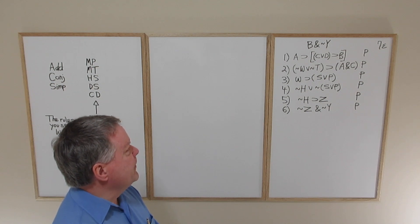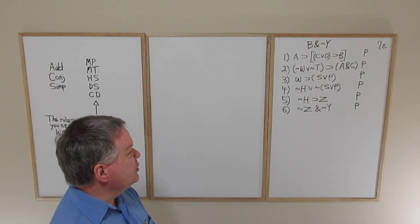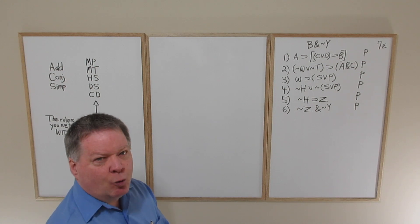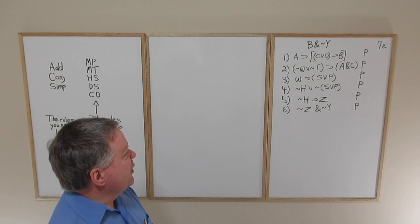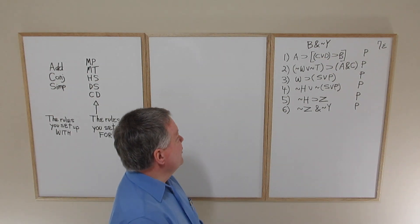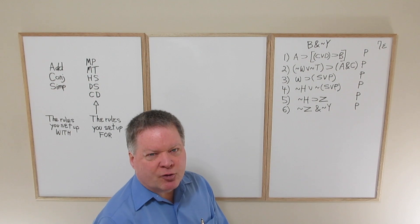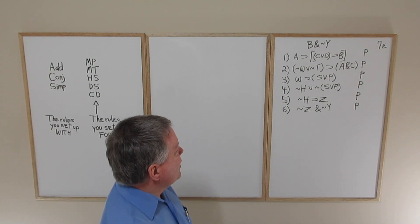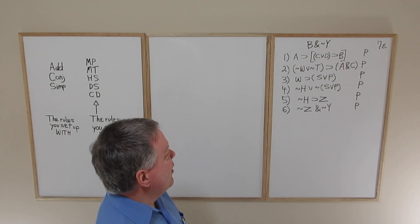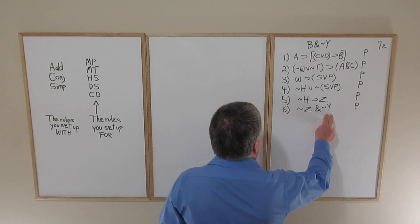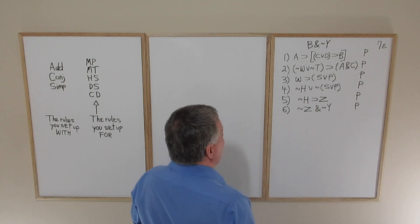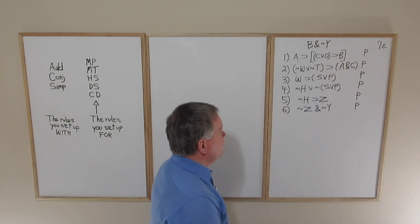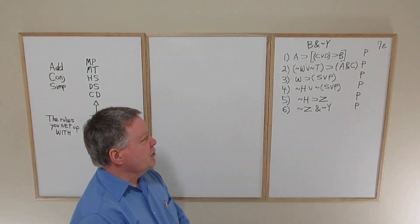With this particular proof we can start off by noting the conclusion. The conclusion is a conjunction, which is the strongest statement we can have in sentential logic, and when it's the conclusion it presents the greatest challenge. In the best case scenario we might have a sentence like B and tilde Y as the consequent of some conditional, so all we have to do is get the antecedent. However, the Y-related information is one of the conjuncts in the conjunction in line six, and the B-related information is the consequent of a conditional which is itself the consequent of a larger conditional.